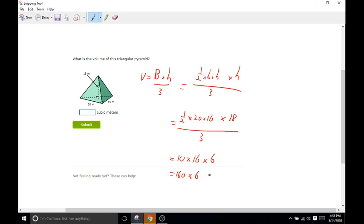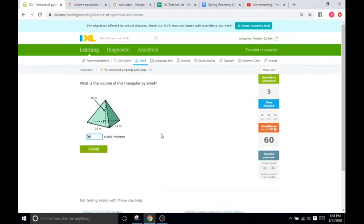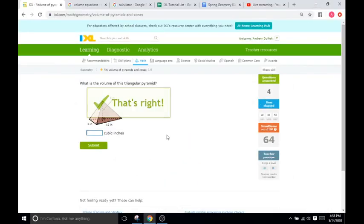And then I'm going to solve that real quick. 160 times 6 is going to be 960. So it's going to be 960. There we go.